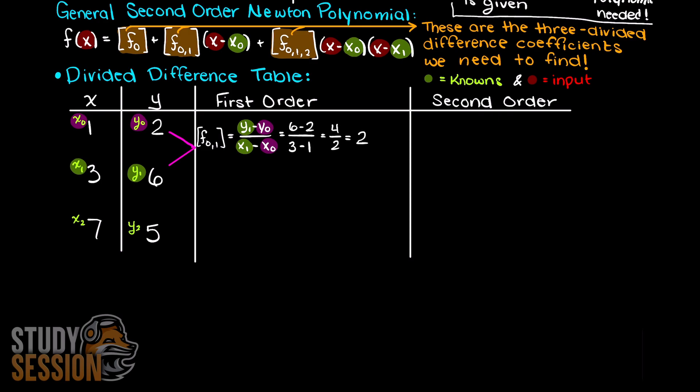As you can see this works out to 2 and this is our first order f0,1 divided difference. Much like we did for f0,1 divided difference, we are going to find the slope between points 2 and 1 and this works out to minus 0.25. And this is our first order divided difference f1,2.